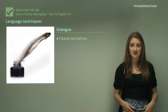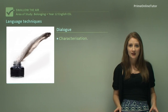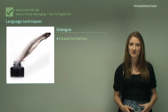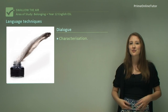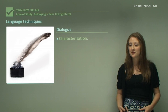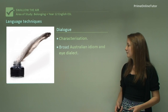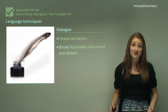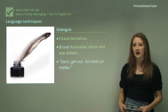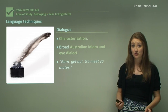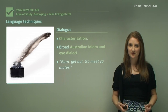The next technique used is characterisation, and this is definitely achieved through dialogue. Dialogue is something which is quite tricky to write because it's quite hard to make it seem realistic. However, Tara June Winch definitely achieves realism through her dialogue, and through excellent dialogue writing manages to create very distinct characters which we really feel like we can get to know. Her broad Australian idiom and eye dialect is used throughout — eye dialect being the concept where you write words as you would say them. So if you take a look at this quote: 'Garn, get out, go meet your mates' — it's writing down in slang, expressing that accent and culture through the way she's presented her words.